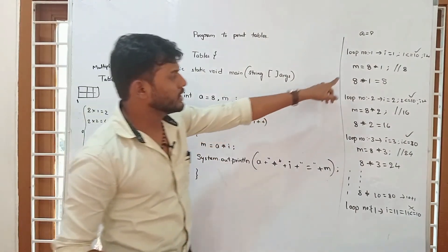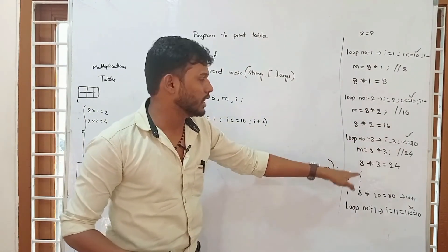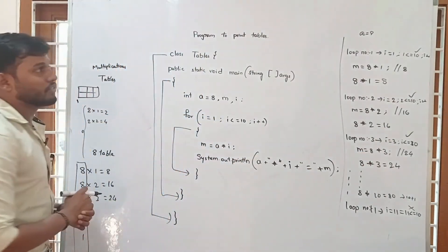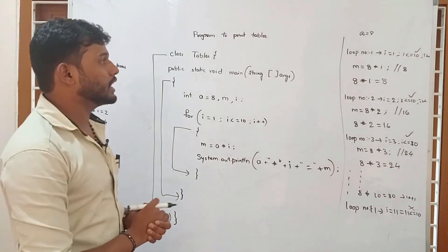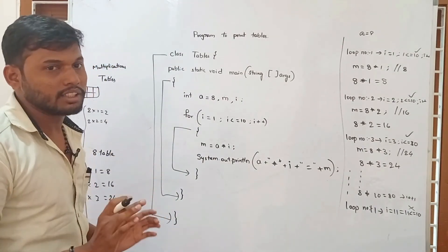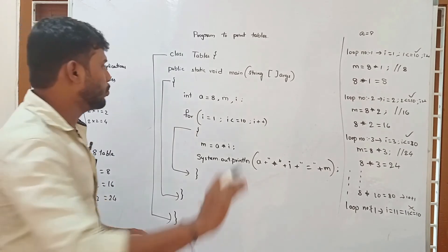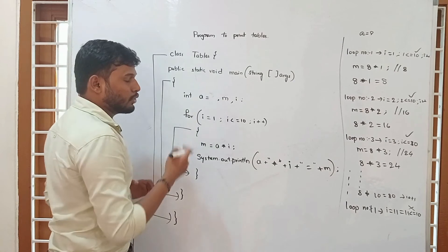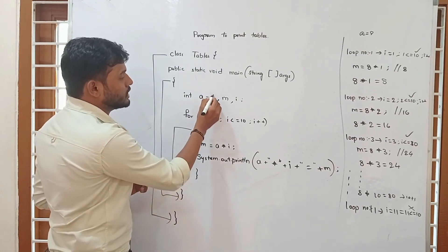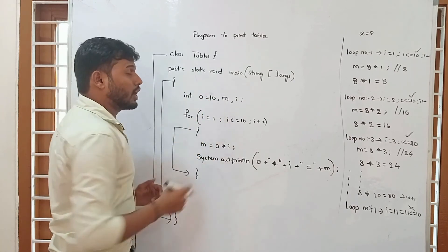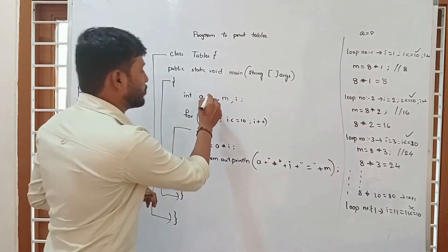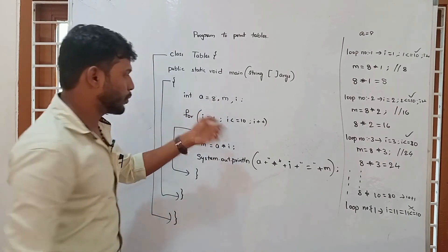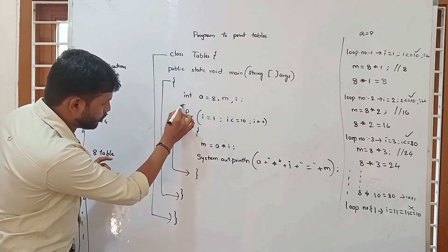Finally, we get the output in our console: 8*1=8, 8*2=16, 8*3=24, and so on. This is the program for printing tables. If the interviewer asks for the 7th table, no problem — just change the value from 8 to 7. If they ask for the 10th or 12th table, we can change it accordingly. Internally, Java will carry out the computation through the program.